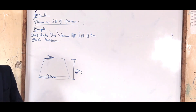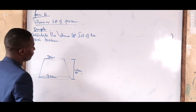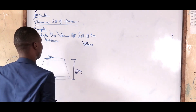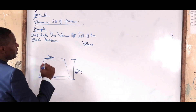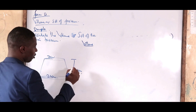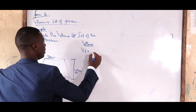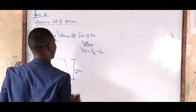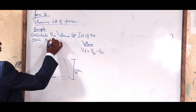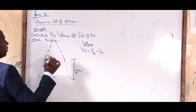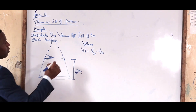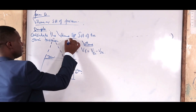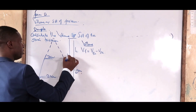We are supposed to look for the volume, so let's start with the volume of the frustum. To get the volume of a frustum, it is the volume of the bigger cone minus the volume of the smaller cone. We call the height of the smaller cone small H, and the total height of the bigger cone capital H.